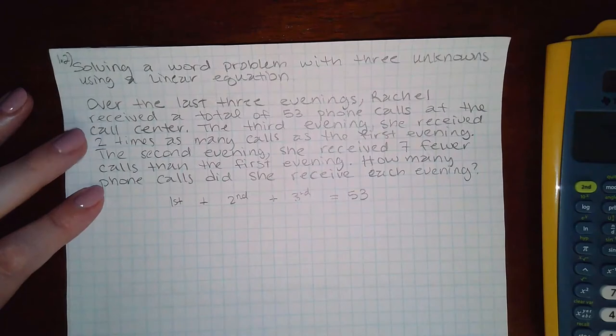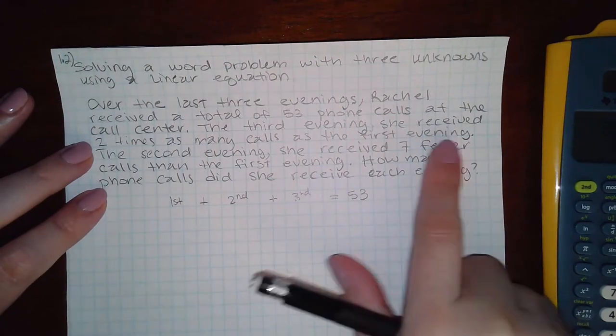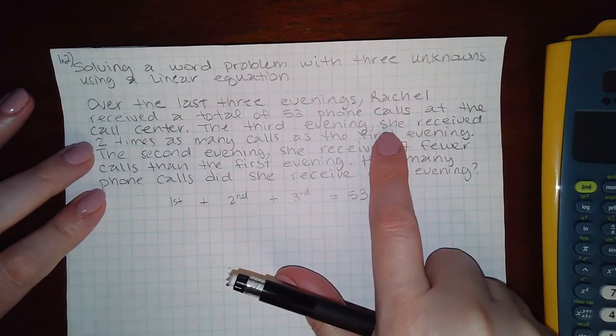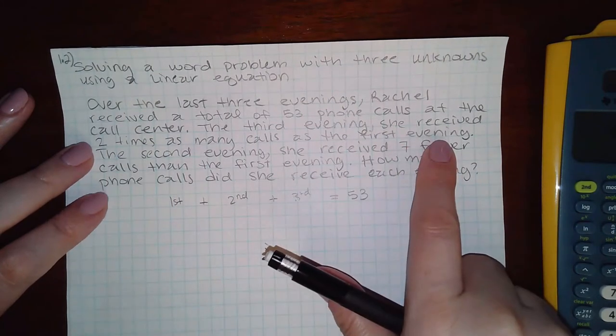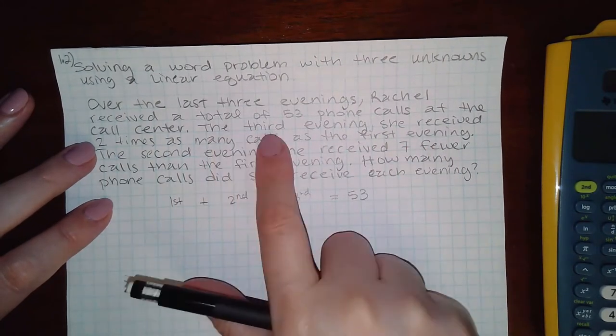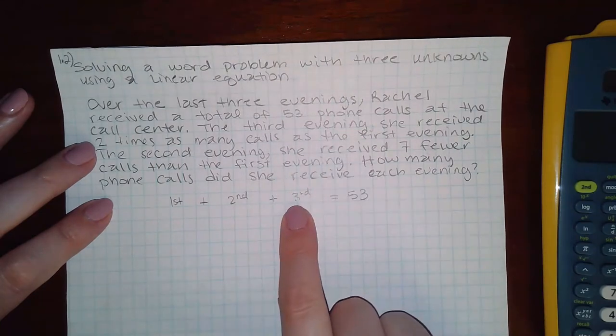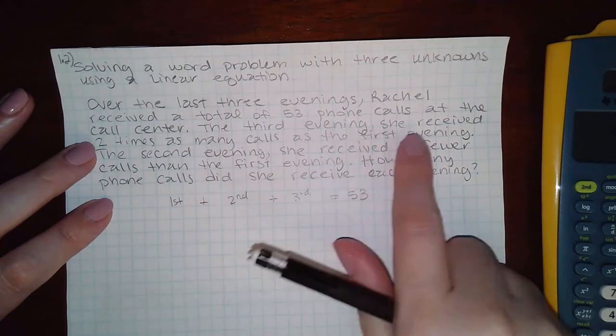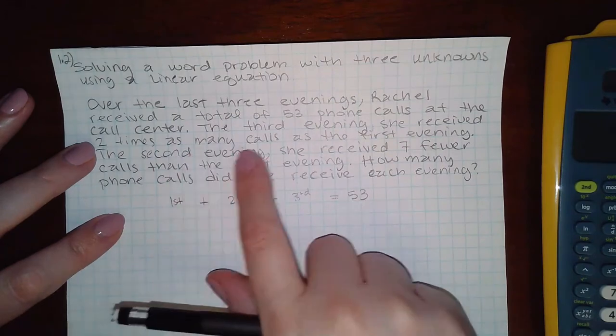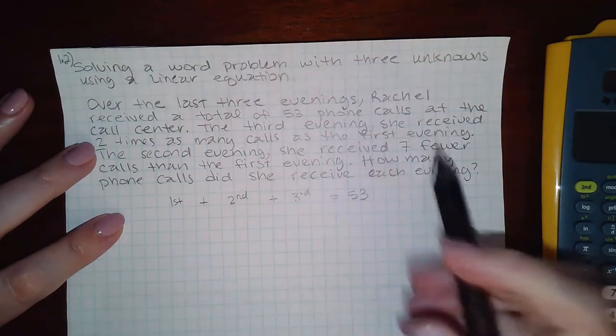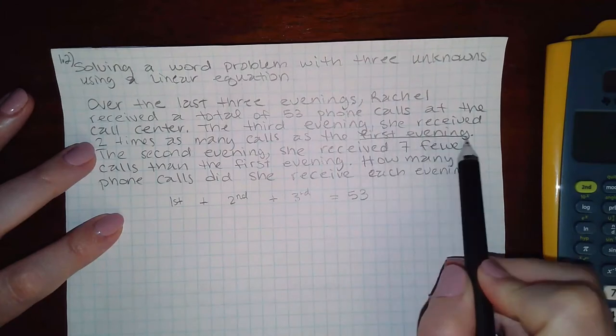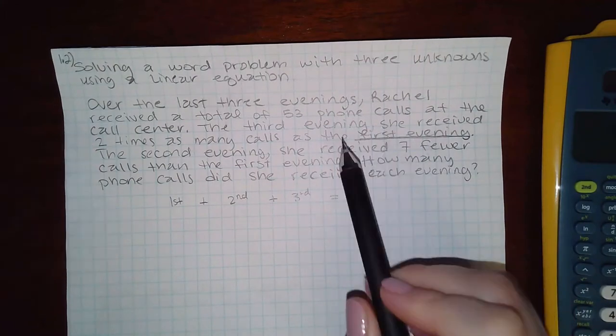Now they talk about how she received two times as many calls on the third evening. They're talking about this one, the third evening. She received two times as many calls as the first evening. So that means the first evening is being used to describe the other evenings.